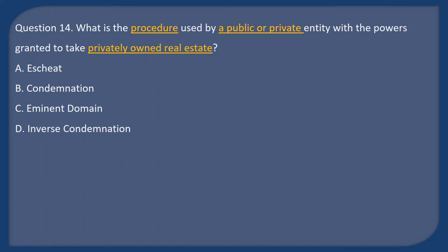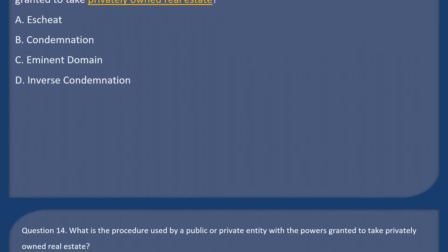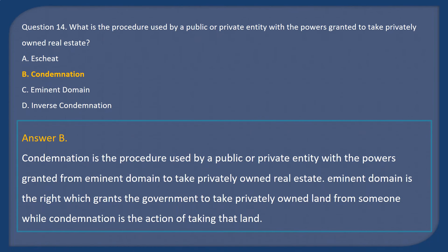Question 14: What is the procedure used by a public or private entity with the powers granted to take privately owned real estate? A. Escheat. B. Condemnation. C. Eminent domain. D. Inverse condemnation. Answer: B. Condemnation is the procedure used by a public or private entity with powers granted from eminent domain to take privately owned real estate. Eminent domain is the right which grants the government to take privately owned land, while condemnation is the action of taking that land.